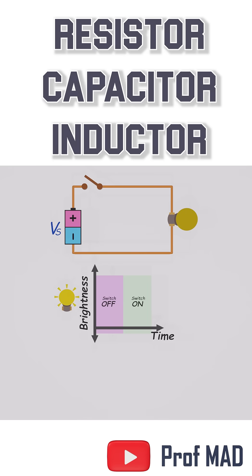First one's easy. Just a power source and a light bulb. Switch off, nothing. Switch on, full brightness instantly. Classic.